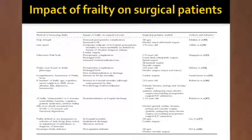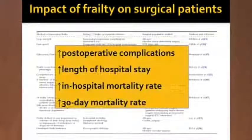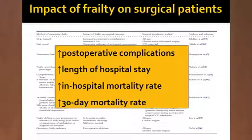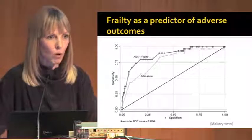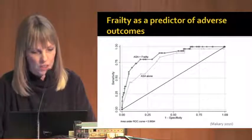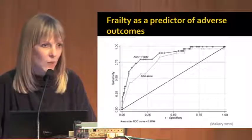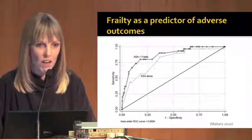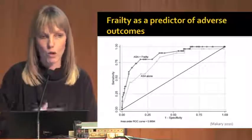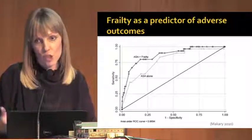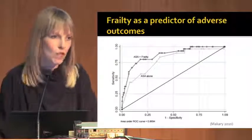Despite this heterogeneity, the message is the same: when patients are frail they have more post-operative complications, stay in hospital longer, and are more likely to die during that admission and within 30 days of hospitalization. When frailty is coupled with the ASA score commonly used by anesthetists for pre-assessment, it's far more predictive of adverse outcomes. One study of 600 patients undergoing elective non-cardiac surgery showed that frailty combined with ASA was predictive of institutionalization at discharge and post-operative morbidity.